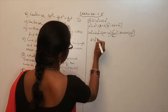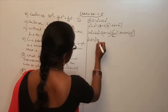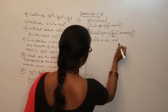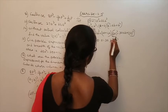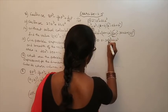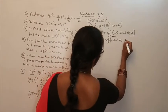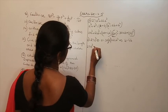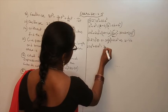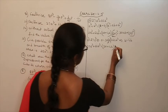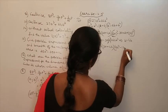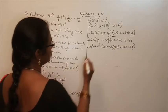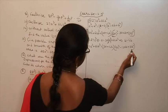Here, a³ equals 27a³ so a equals 3a, and b³ equals 64b³ so b equals 4b. Therefore, 27a³ plus 64b³ equals (3a plus 4b)(9a² minus 12ab plus 16b²). The factorization of 27a³ plus 64b³ is (3a plus 4b)(9a² minus 12ab plus 16b²).